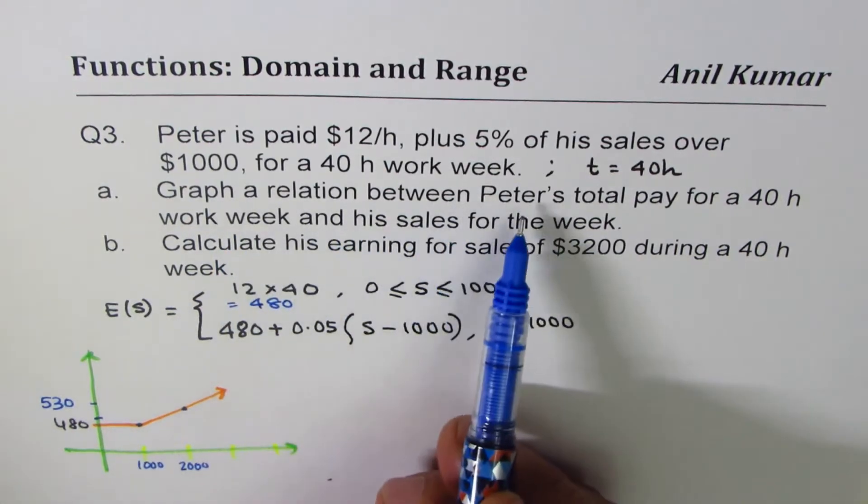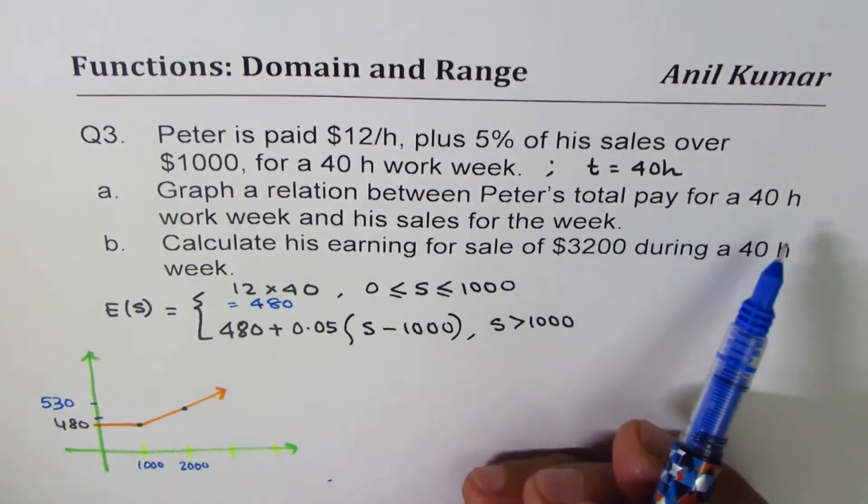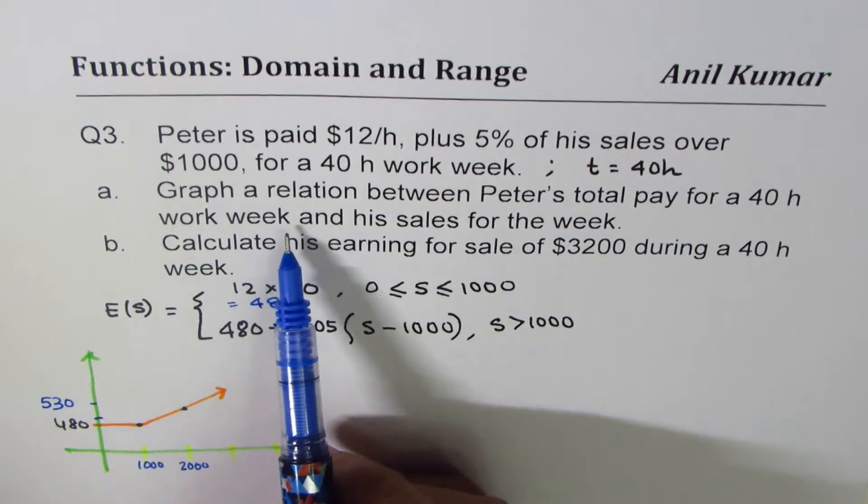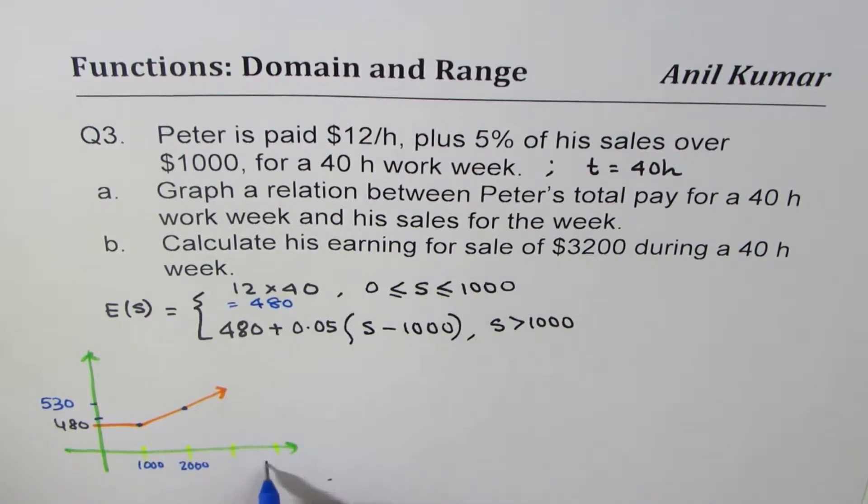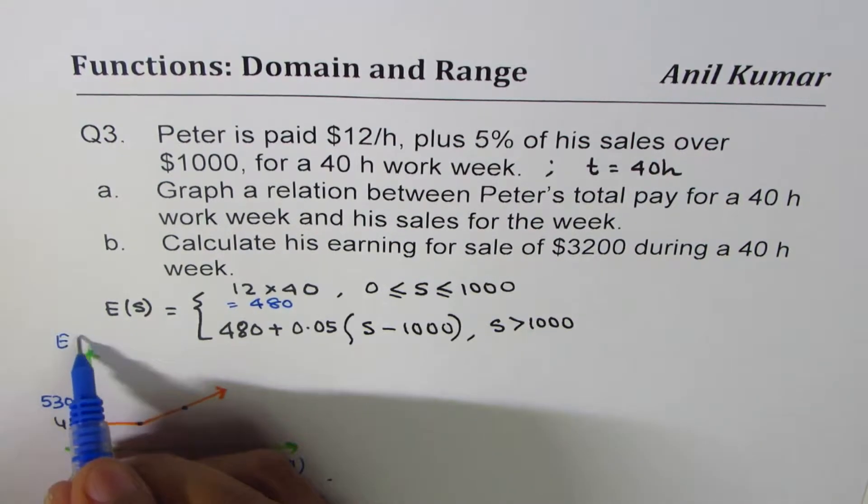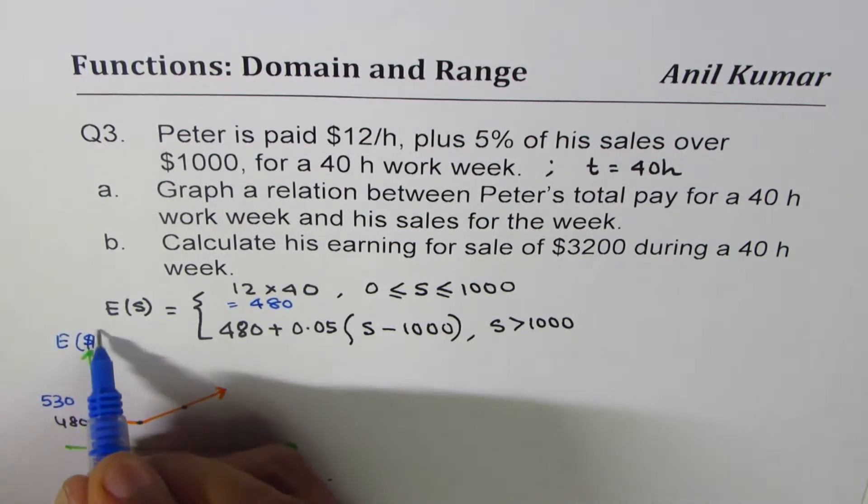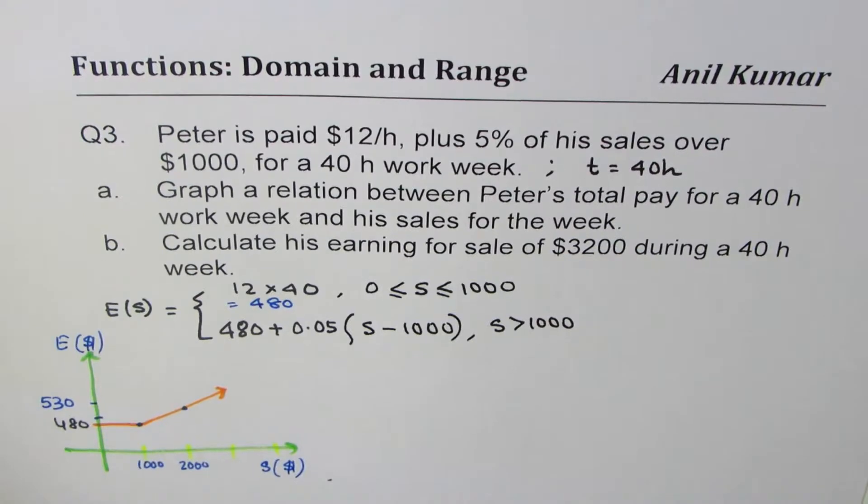So graph the relation between Peter's total pay for 40 hours work week and his sales. So here we have sales, sales of course in dollars and earnings also in dollars. So that is how I could draw.